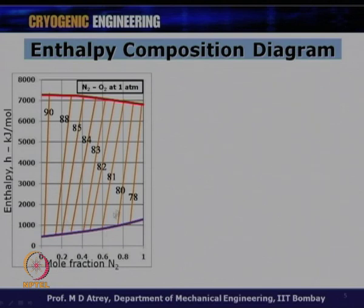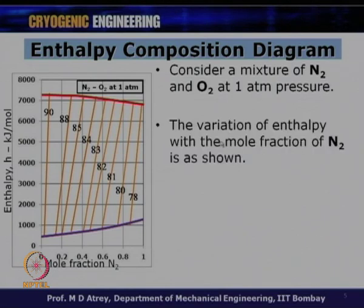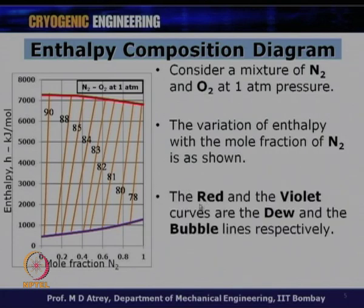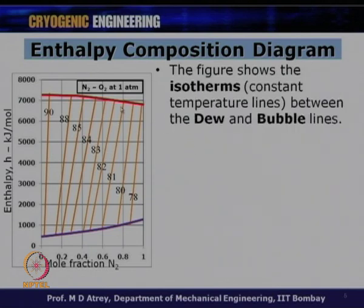For a mixture of nitrogen and oxygen at one atmosphere, the variation of enthalpy with the mole fraction of nitrogen is as shown. The red and violet curves are the dew and bubble lines respectively — the dew line corresponds to the start of condensation and the bubble line to when phase change happens, as seen in the temperature composition diagram. The figure also shows isotherms — constant temperature lines — between the dew and bubble lines.